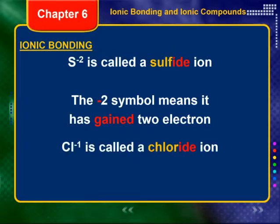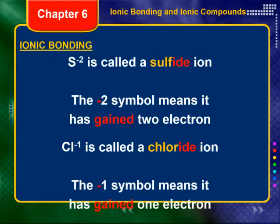Chlorine minus one — it's gained one electron, so it's got a negative one charge. It goes from chlorine — we drop that 'ine' and replace it with 'ide', so it becomes chloride. So: positively charged cations, you don't change the name. Negatively charged anions, you drop the last syllable and add 'ide'.